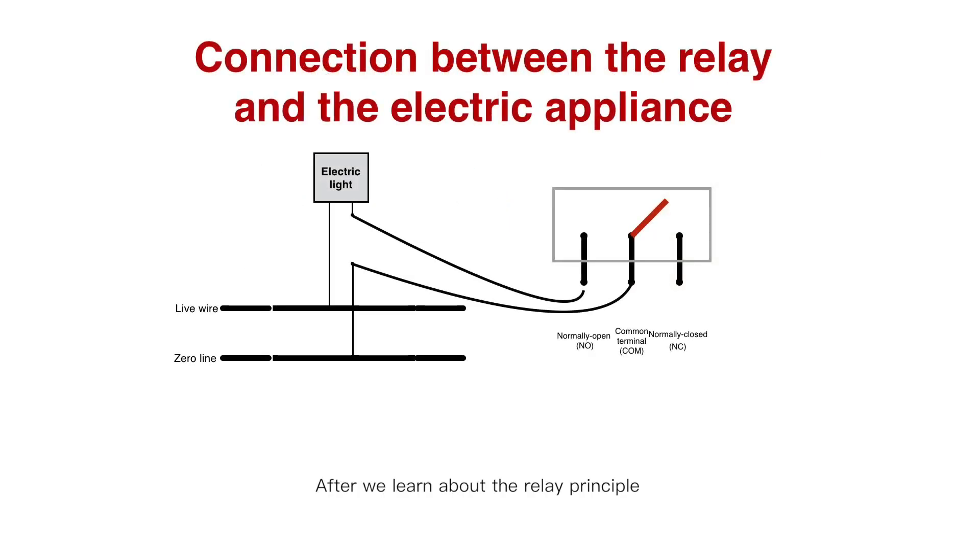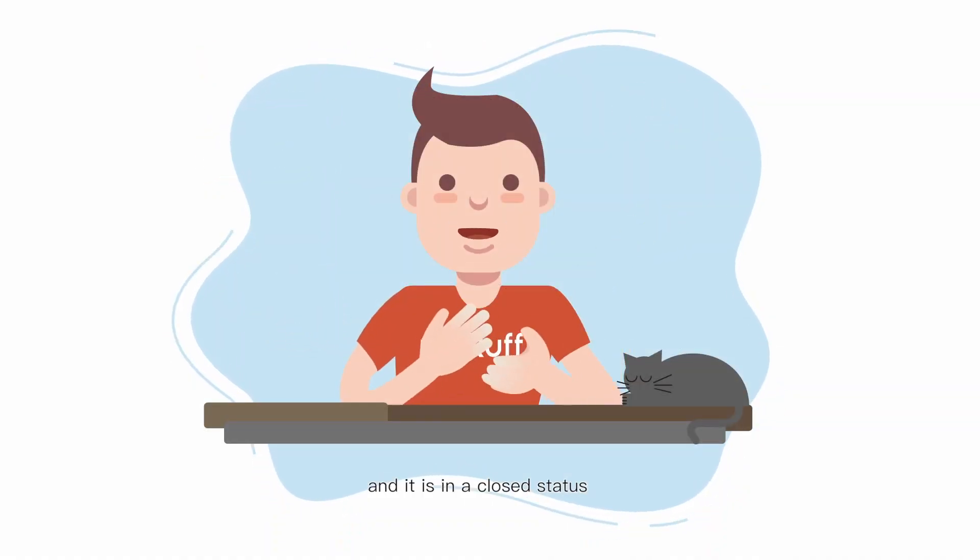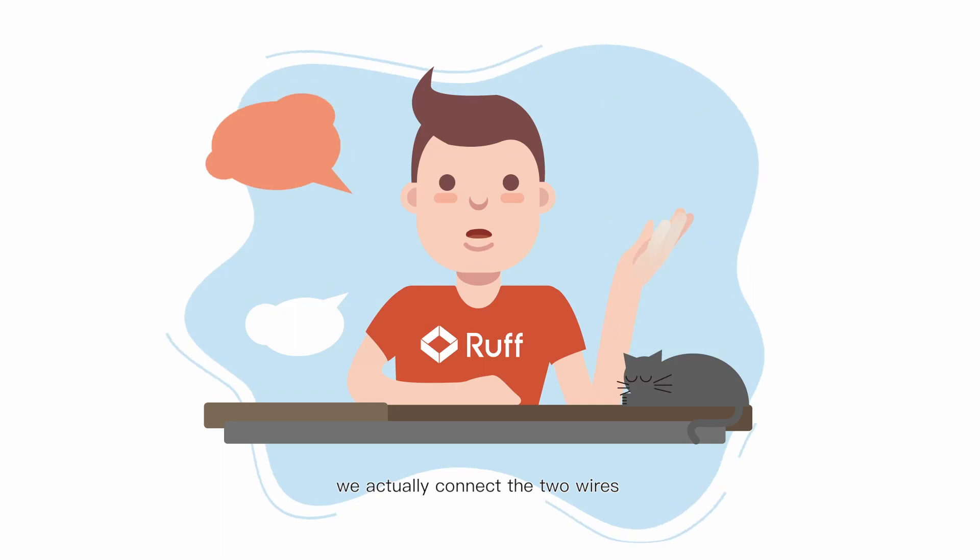After we learn about the relay principle and how to change this light socket, we will connect the two wires of light with the relay. Let's connect the two wires to the normally open and normally closed terminals of relay, respectively. When we control this relay and it is in the closed status, we actually connect the two wires.